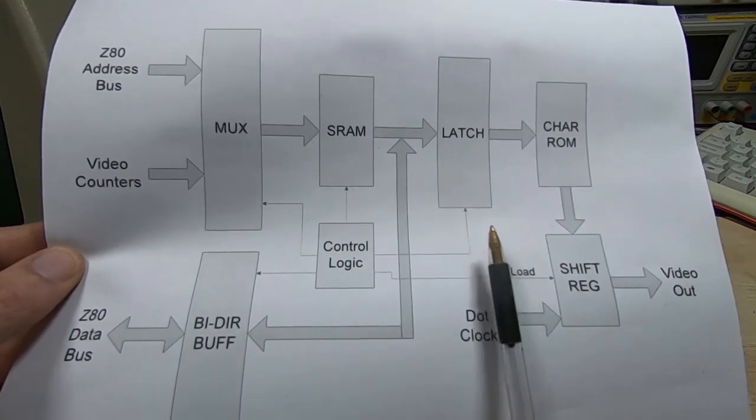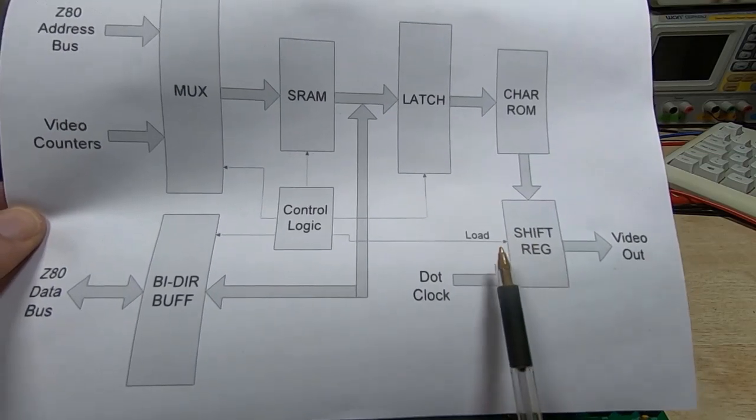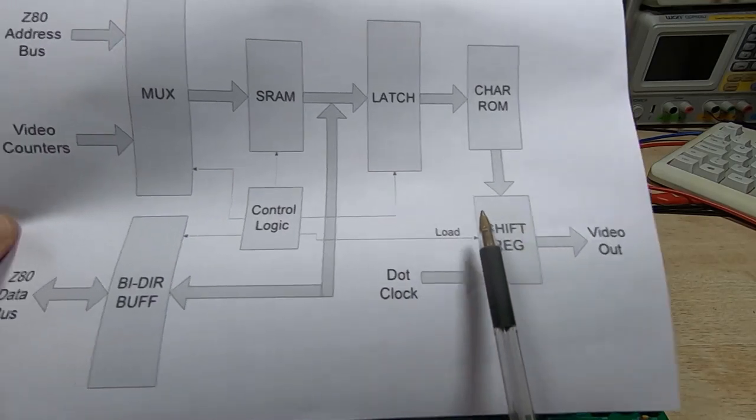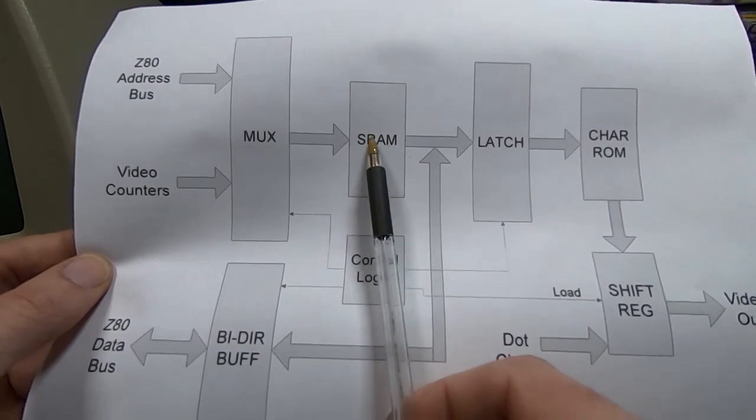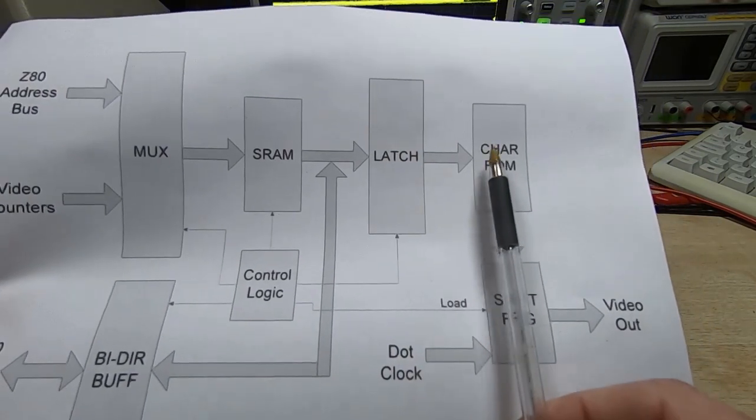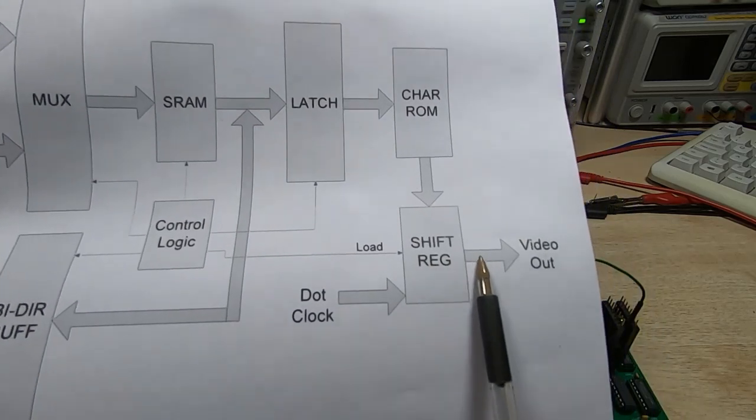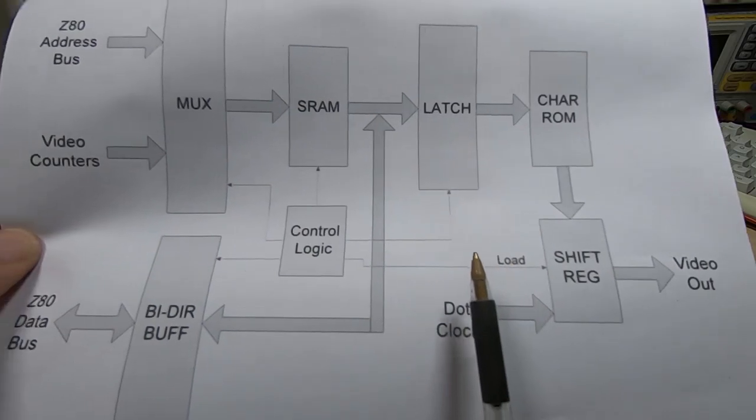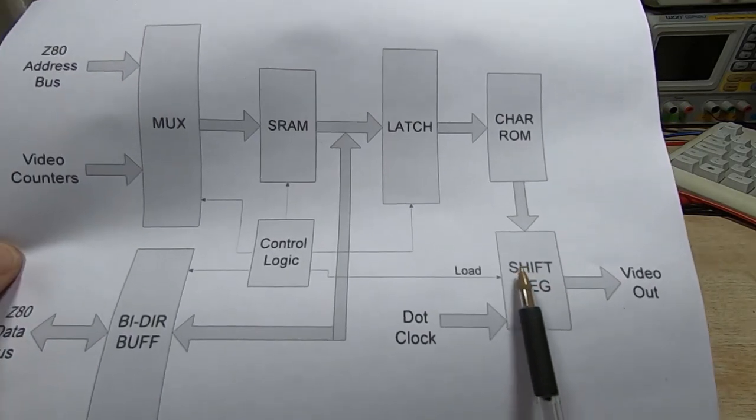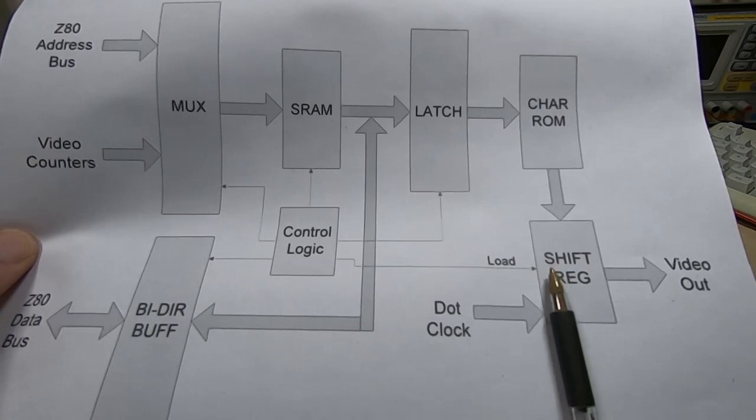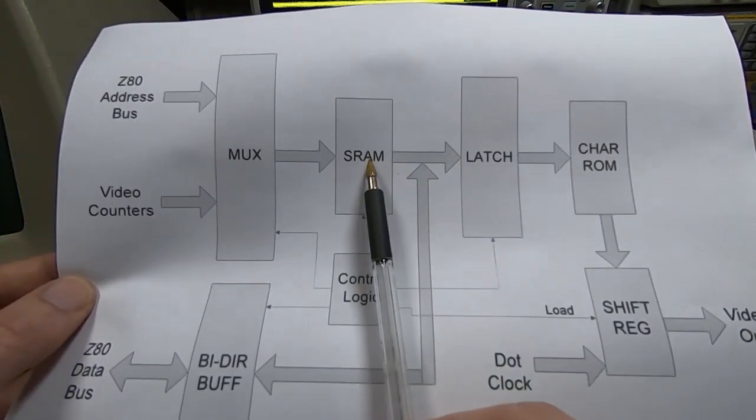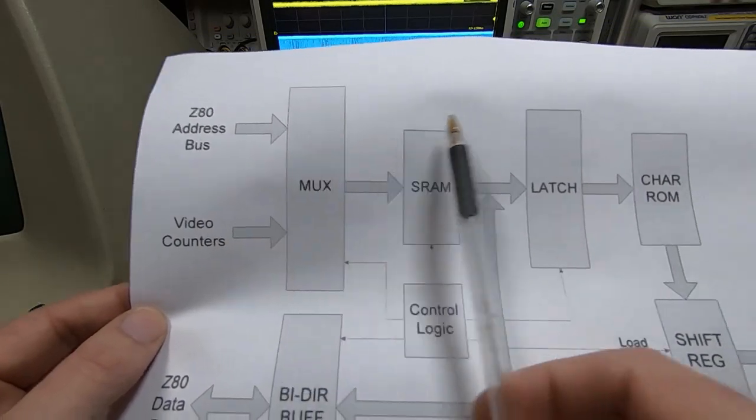The actual solution is incredibly simple - all we have to do is blank the video out whenever we update the SRAM, whether we read it or write it. That way the wrong value that was latched and sent through into the shift register doesn't end up being shifted out onto the display. The main issue is exactly how to go about doing that, because the loading of the shift register is asynchronous relative to the accessing of the SRAM.